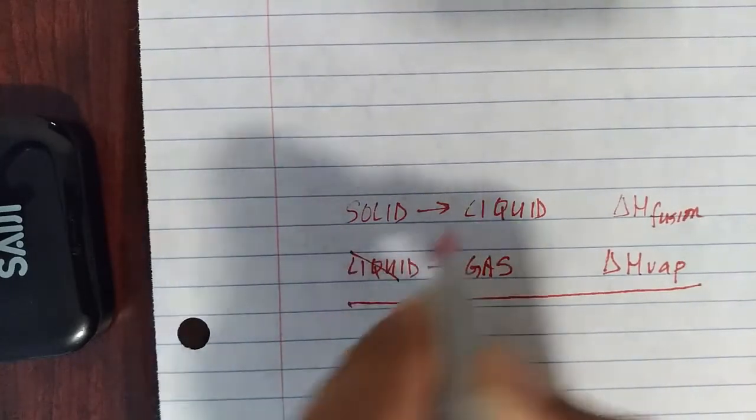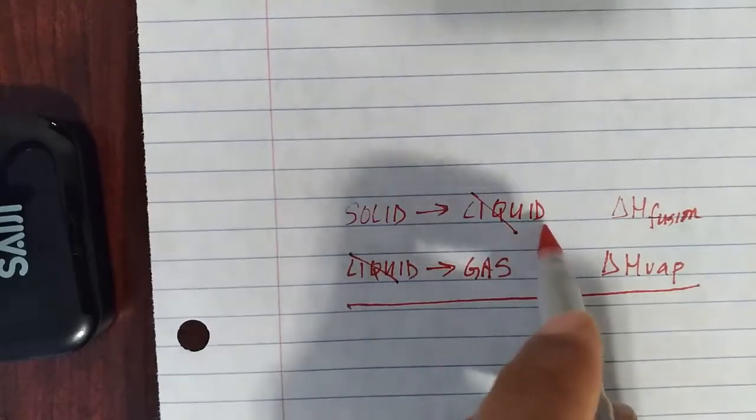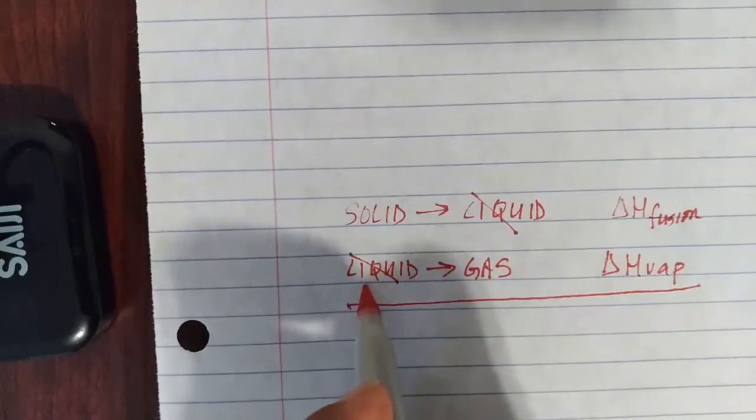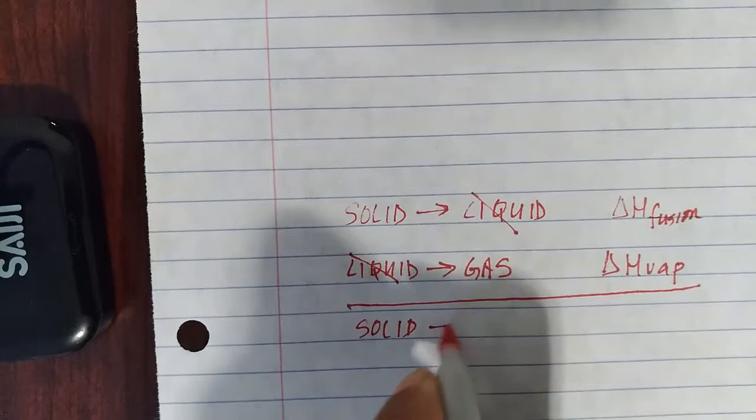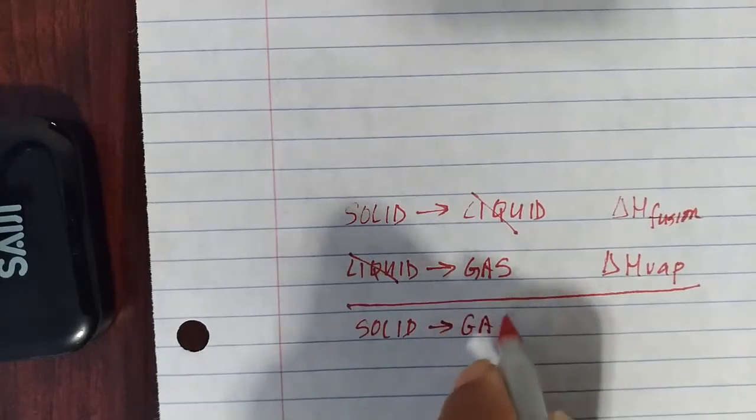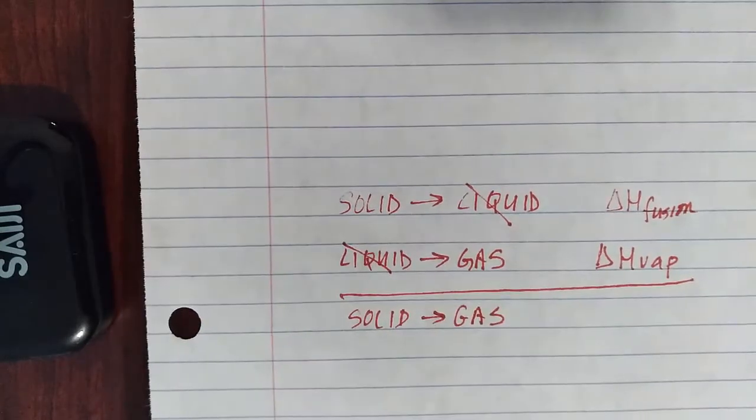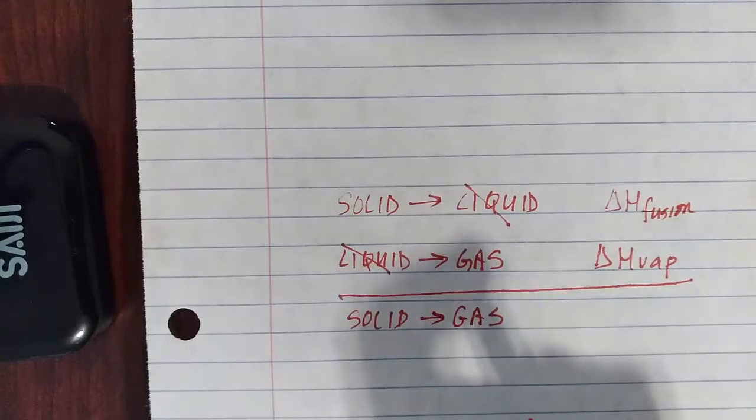So if we add these two processes up, the liquid on this side of the reaction cancels out with the liquid on the opposite side of the reaction. And we are left adding this up to a solid going to a gas. Solid going to a gas is known as sublimation.